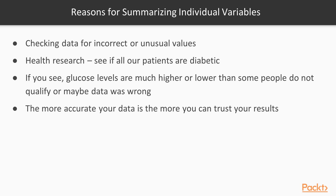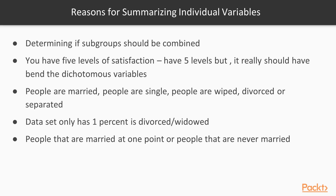The more accurate your data is, the more you can trust your results. Another reason why you would want to summarize individual variables is that sometimes you may have to combine groups. For example, you may have a satisfaction question with five levels — from very satisfied to not at all satisfied. We may have five levels, but in the end it really might be that it should have been a dichotomous variable. So we might want to group some of those categories together so that we have enough cases in each category to do appropriate analyses.